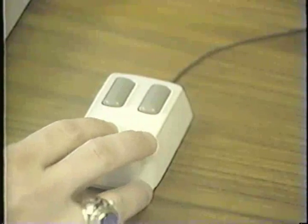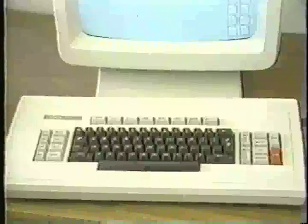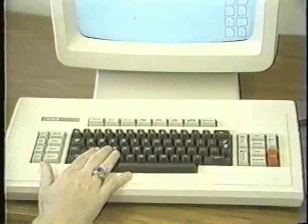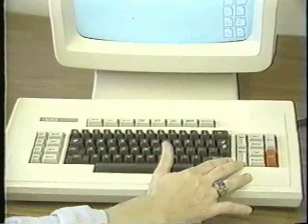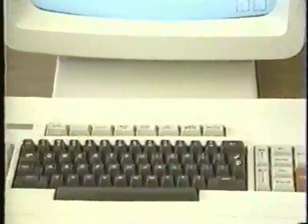Two buttons on the mouse, called Select and Adjust, are used to make and adjust a selection. The Star keyboard has three groups of function keys and a standard central part. The right functional group is not used for graphics editing, so we will ignore it. The upper function group is referred to as soft keys.